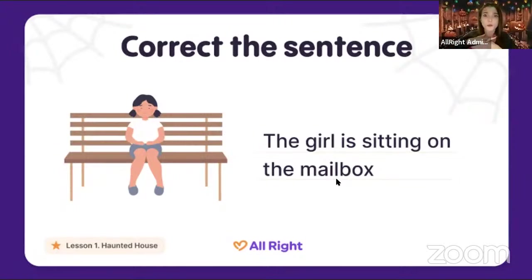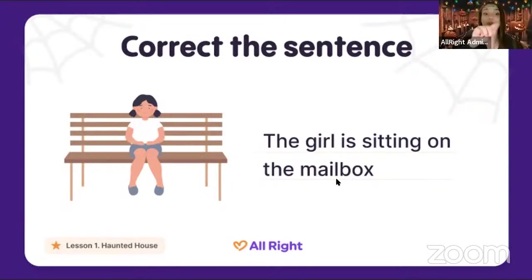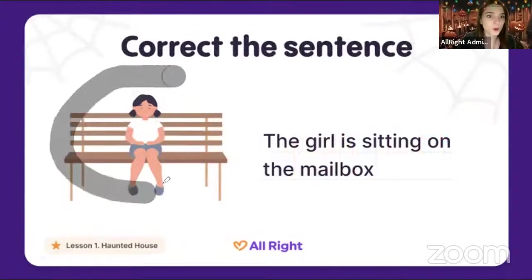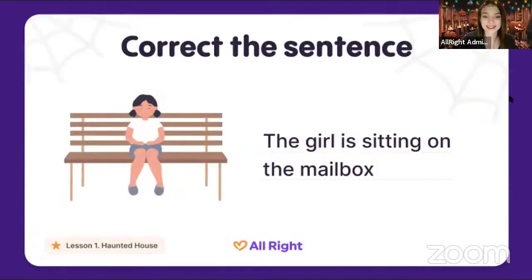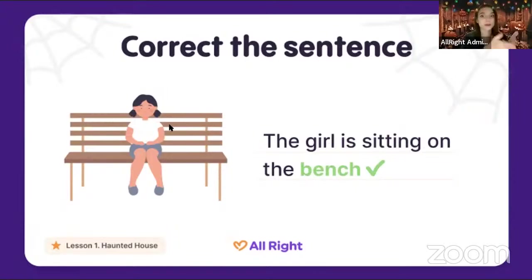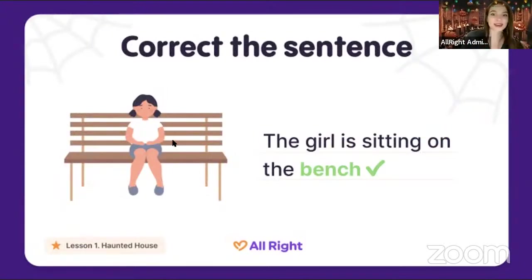Is the girl sitting on the mailbox? No — the answer is false. But where is the girl sitting? Let's correct it: the girl is sitting on the bench. You can see the bench outside the house, not inside.